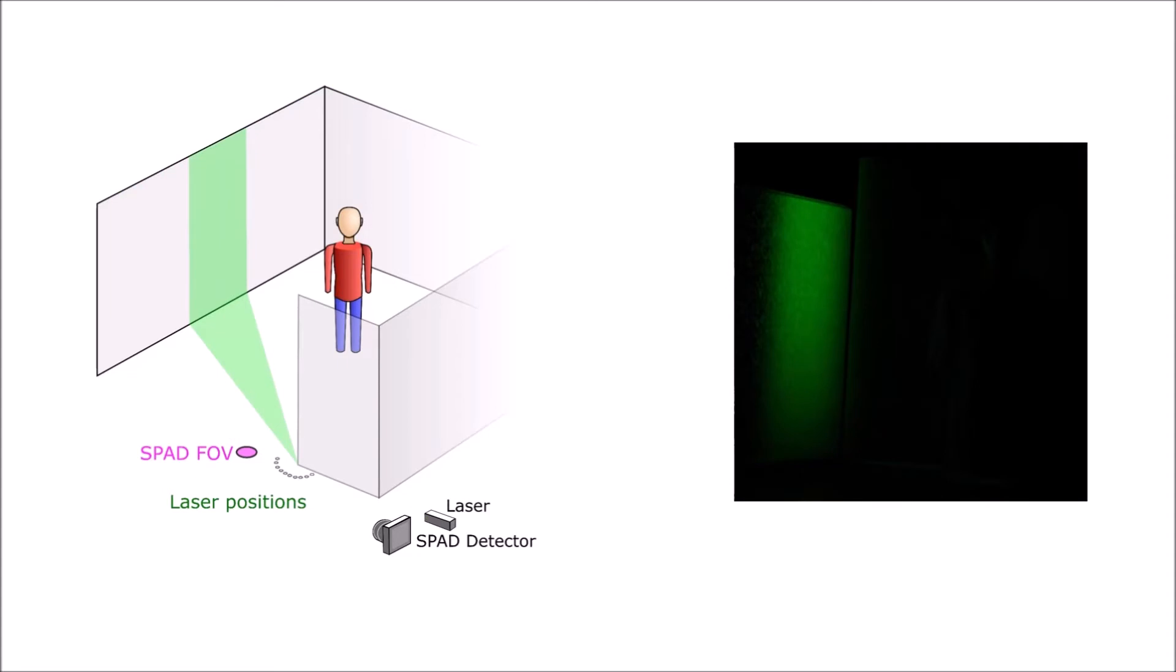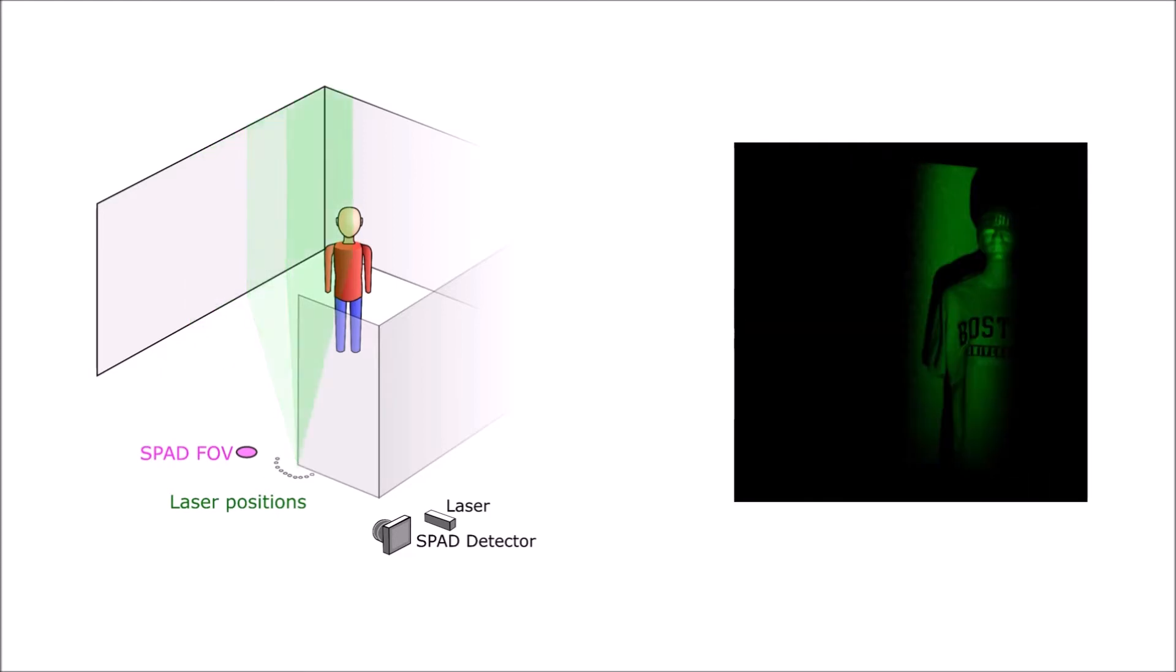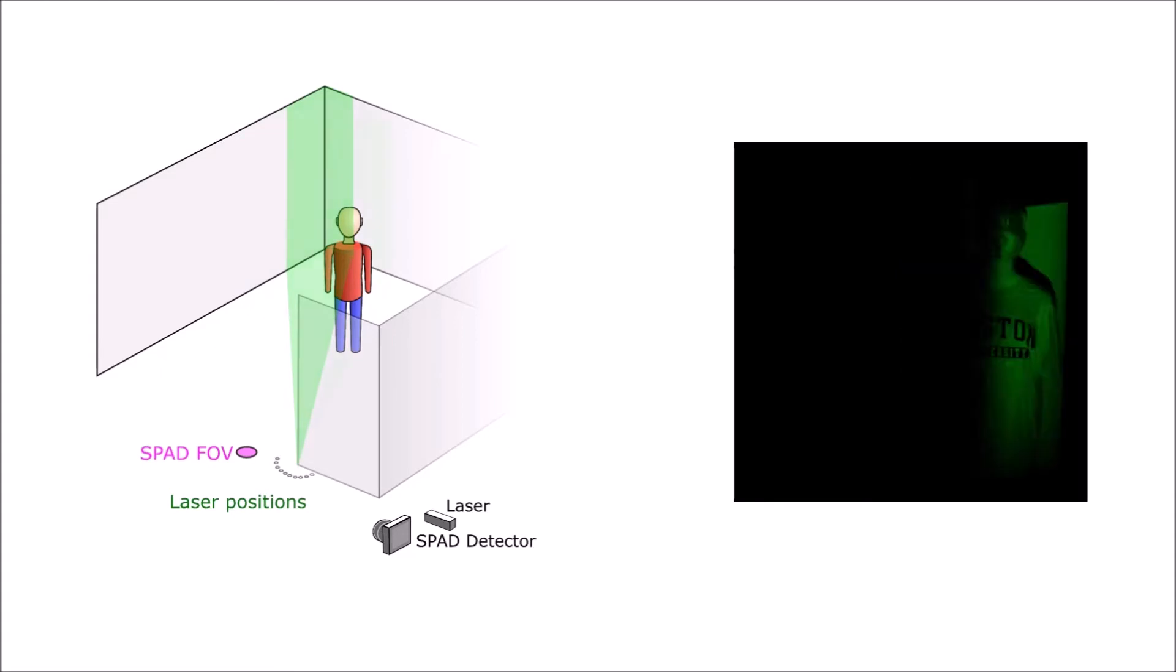If we take differences between our measurements, we can assume that these difference measurements contain only photons reflected from a small wedge within the hidden scene. On the right, we show the differences between subsequent photos of the real hidden area. We see that the small wedges of the hidden scene are illuminated when we take these differences.